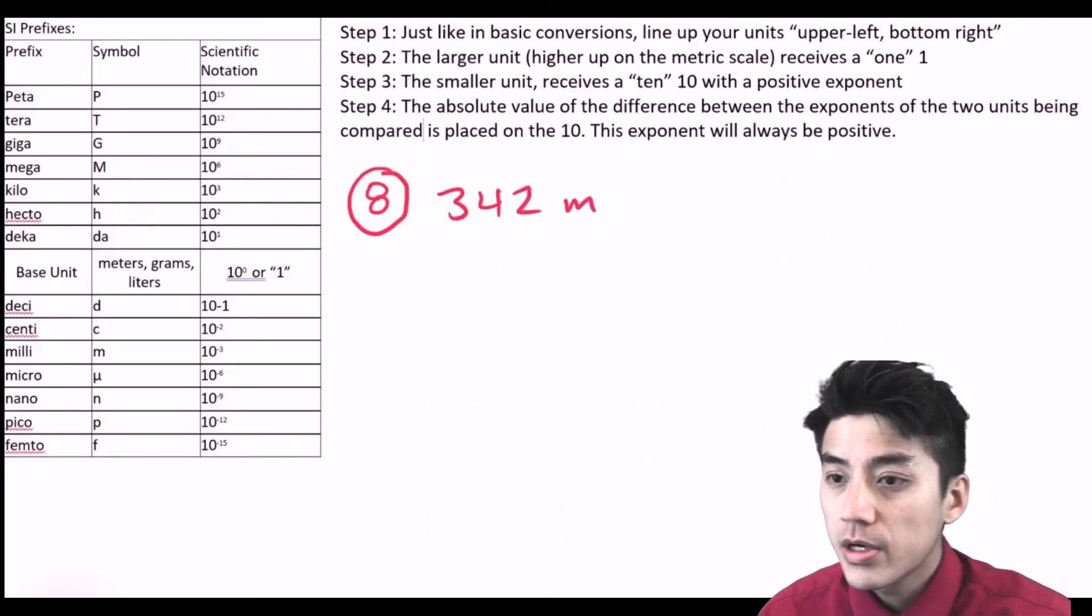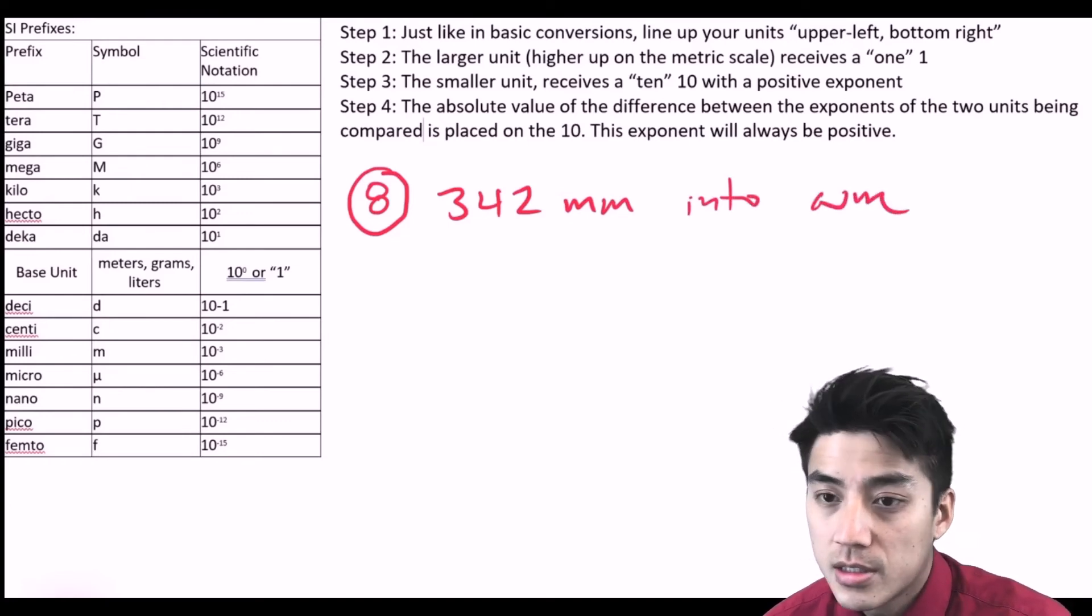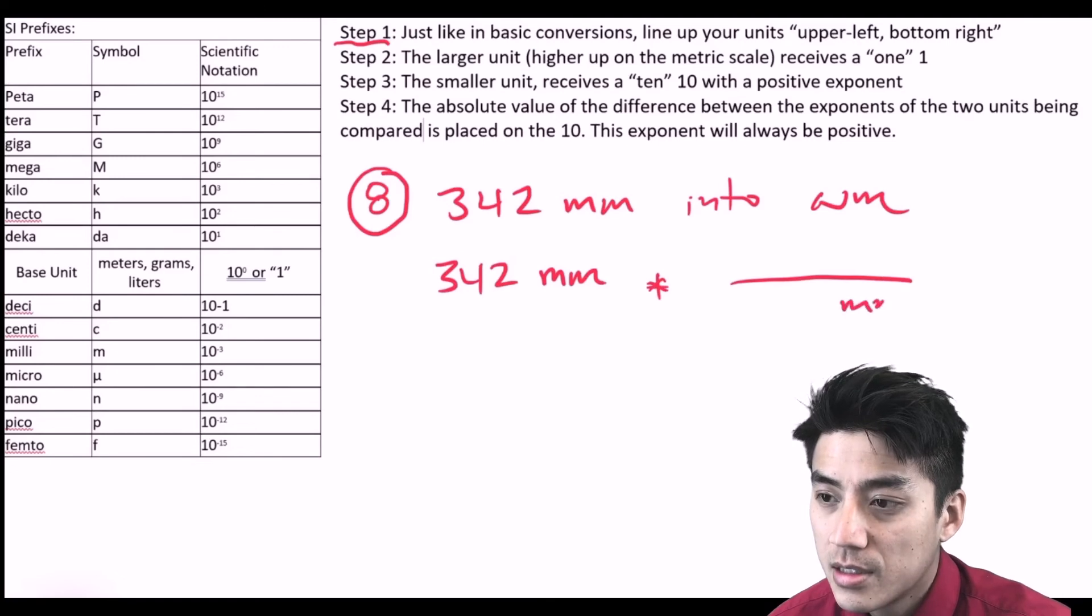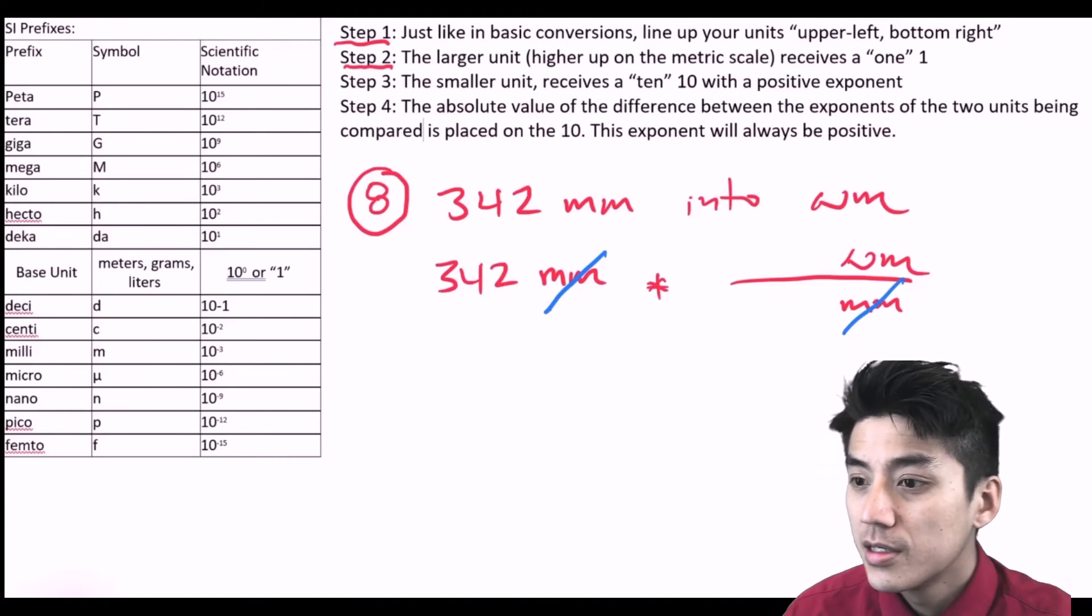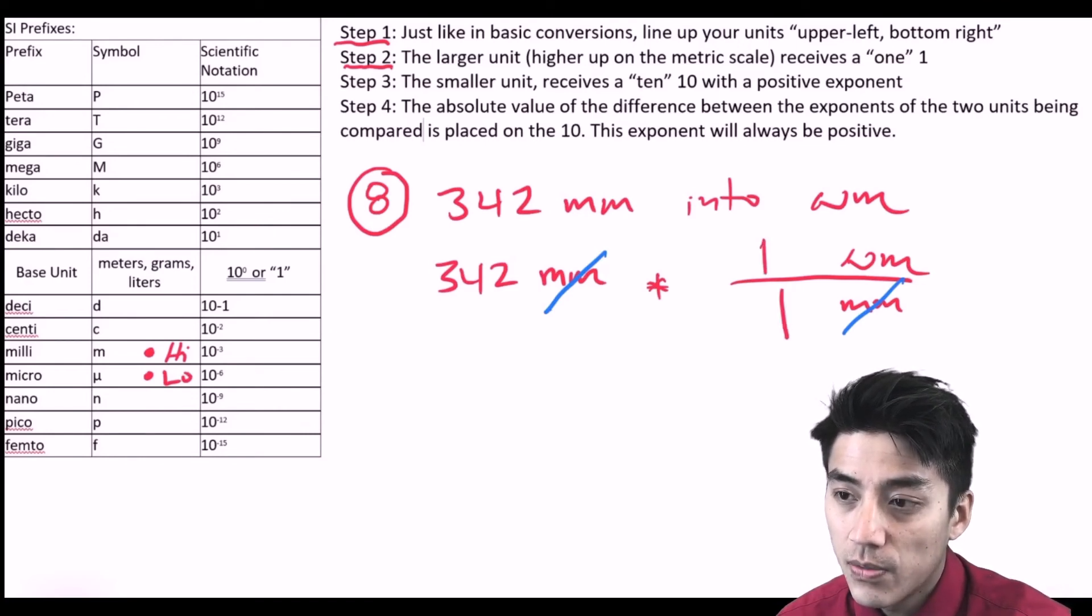Problem number eight. Change 342 millimeters into micrometers. Step one, line up your units again, upper left and bottom right. Millimeters will go upper left and bottom right, just like that. Make sure the millimeters cancel out. Step two, let's compare our two units. We're comparing milli and micro. Milli is higher up, micro is lower. So milli gets the one, micro gets the ten. The ten also receives an exponent.